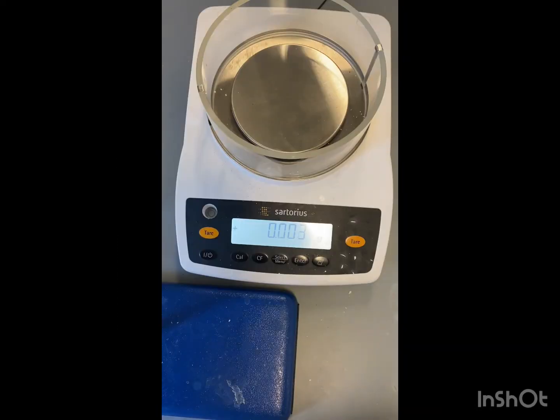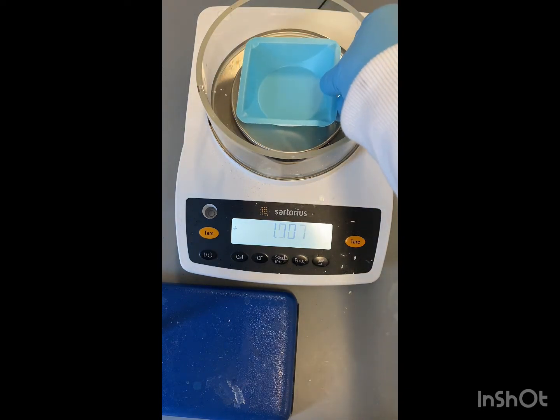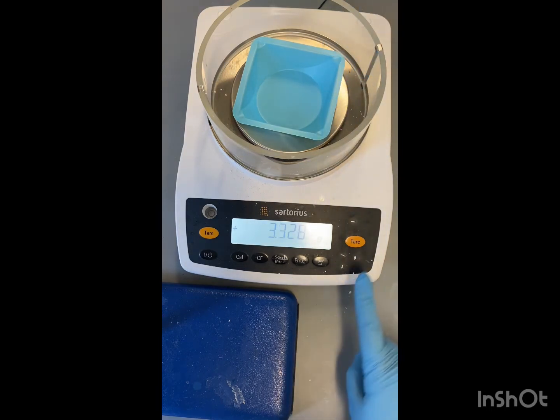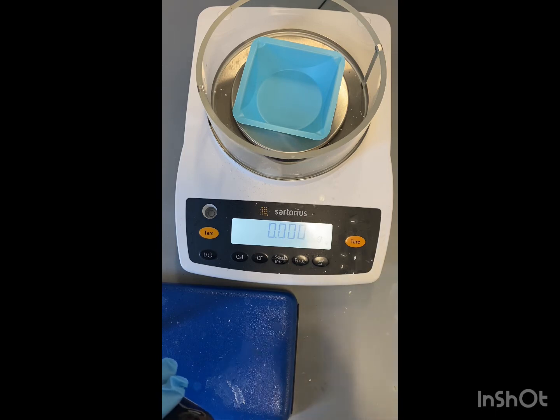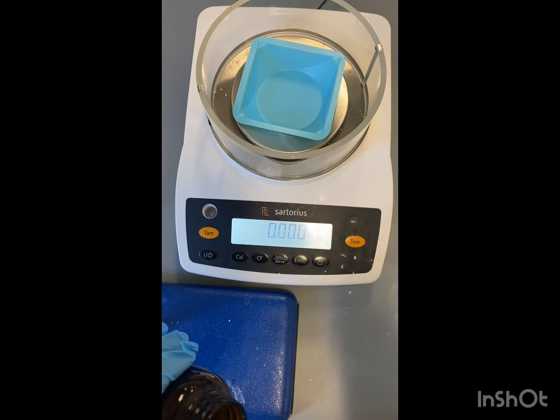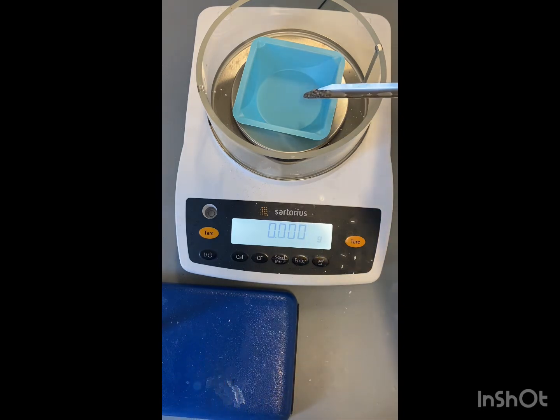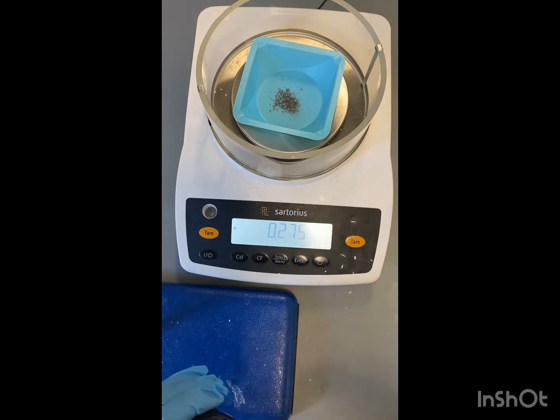Now that we have our safety goggles and gloves on, we're going to weigh out around 250 mg of the impure benzoic acid. First we're going to put our weigh boat on the scale, tare it, and then try to get around 250 mg of our impure benzoic acid. So we've got 0.275 grams. That'll be good.